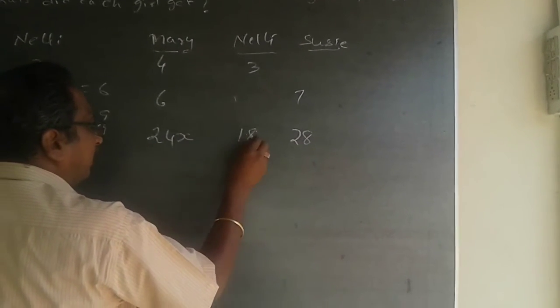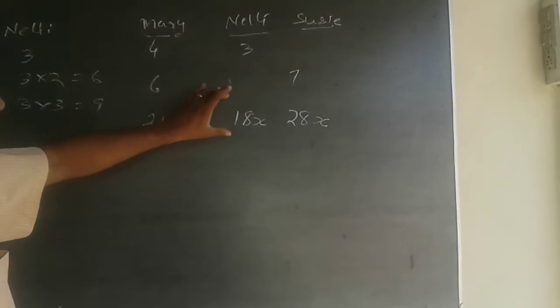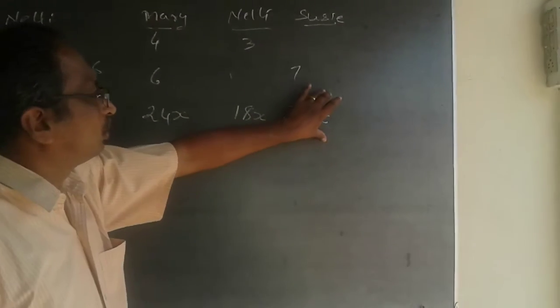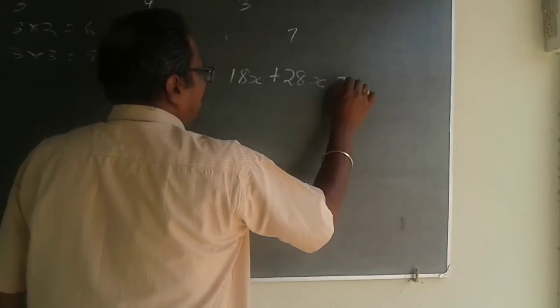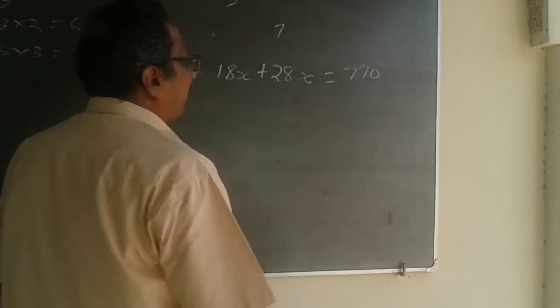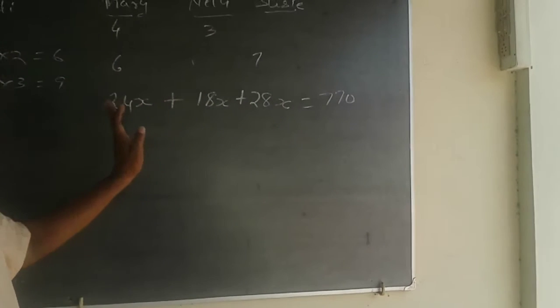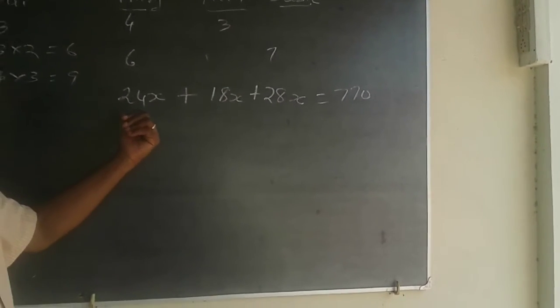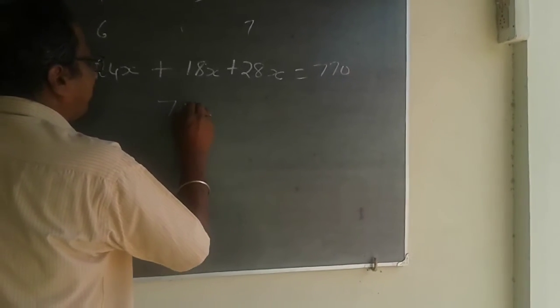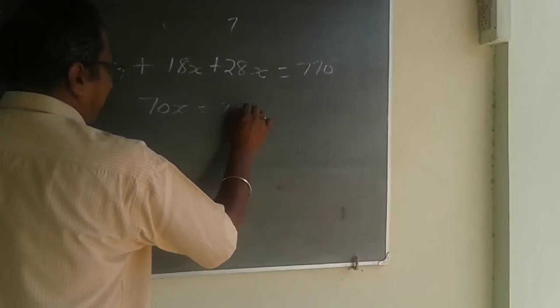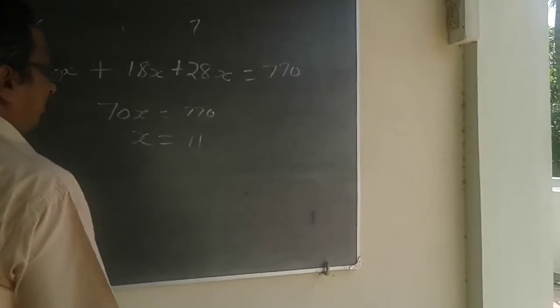Multiply by the same number. Let the variable be x, x and x. So Mary will be taking 24 into x, Nelly will be taking 18 into x, Susie will be taking 28 into x. Now add all this, because the total number of chestnuts is 770. They will be dividing 770 in this ratio. When you total this, 24 plus 18 is 42, plus 28 will be 70. So 70x will be equal to 770, or x will be equal to 11.